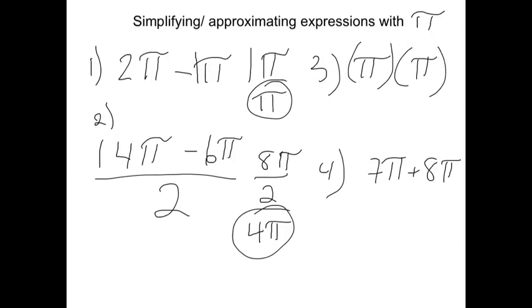π times π is the same as π squared. It's like 4 times 4 is the same as 4 squared, or 27 times 27 is the same as 27 squared. 7π plus 8π is 15π. I add the 7 and 8, and then I just let the pi come along for the ride.